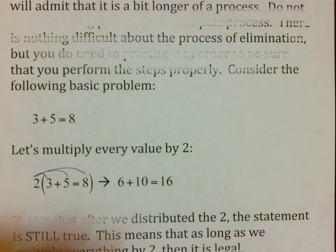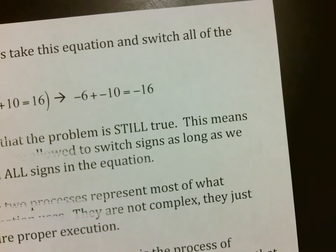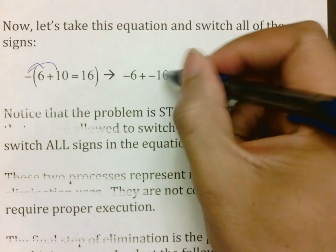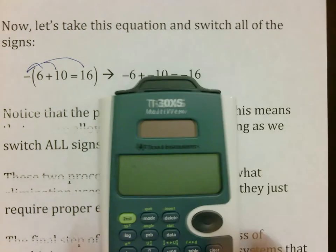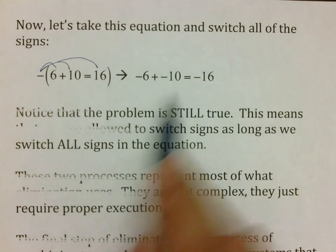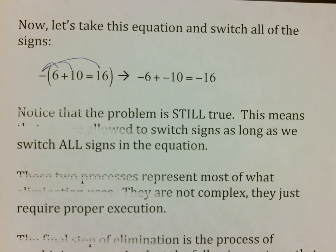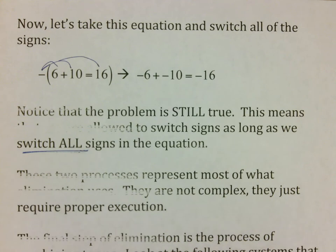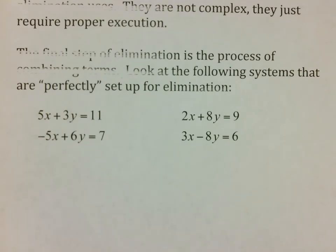Notice that 6 plus 10 is still 16, so it's still true, which means that if you take a problem like this and you multiply everything by 2, then it's still legal. We could also take our 6 plus 10 equals 16 and distribute a negative. And our calculator would verify that negative 6 plus negative 10 is still negative 16. What this means is you can use all that stuff to switch signs and multiply numbers because it works out and everything stays legal as long as you treat everything the same.